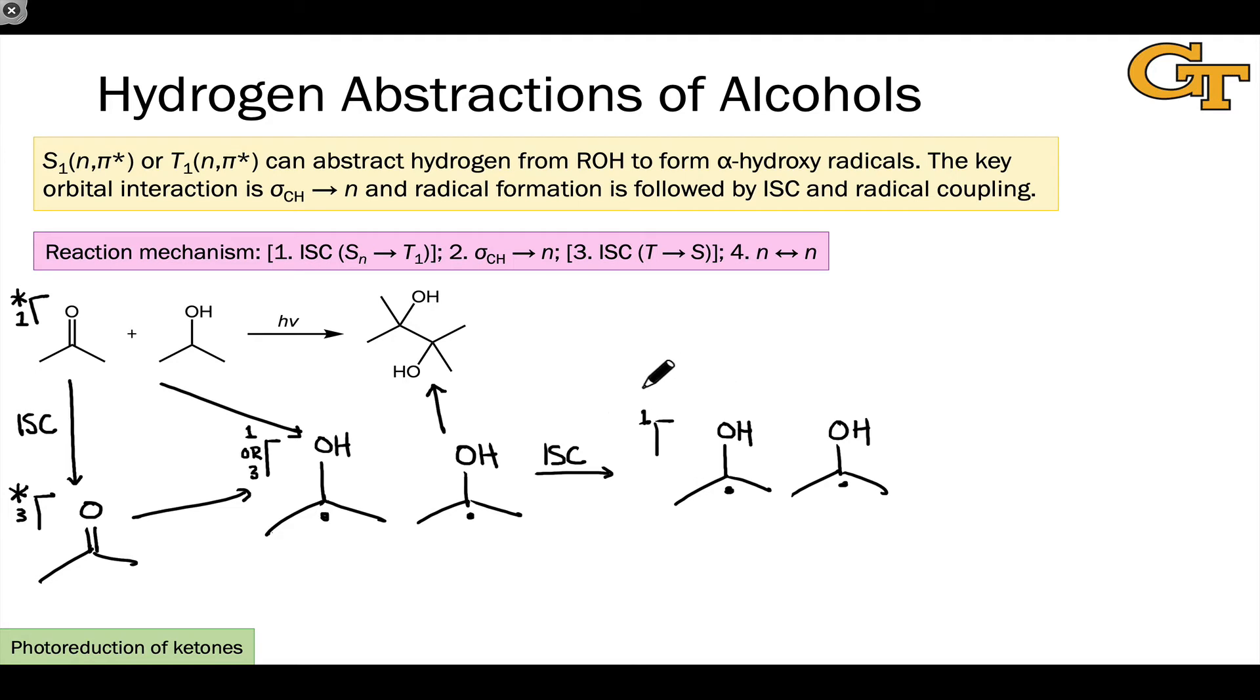For the radical pair, intersystem crossing tends to be more rapid than for the excited state because the electrons are farther apart in space. Notice also that the overall process amounts to a reduction of the ketone since we're starting with a carbon-oxygen pi bond that is replaced with a carbon-carbon bond in the product. We've gone from essentially a carbonyl to an alcohol functional group. That's a reduction process. This is sometimes called photoreduction of ketones via hydrogen donors.